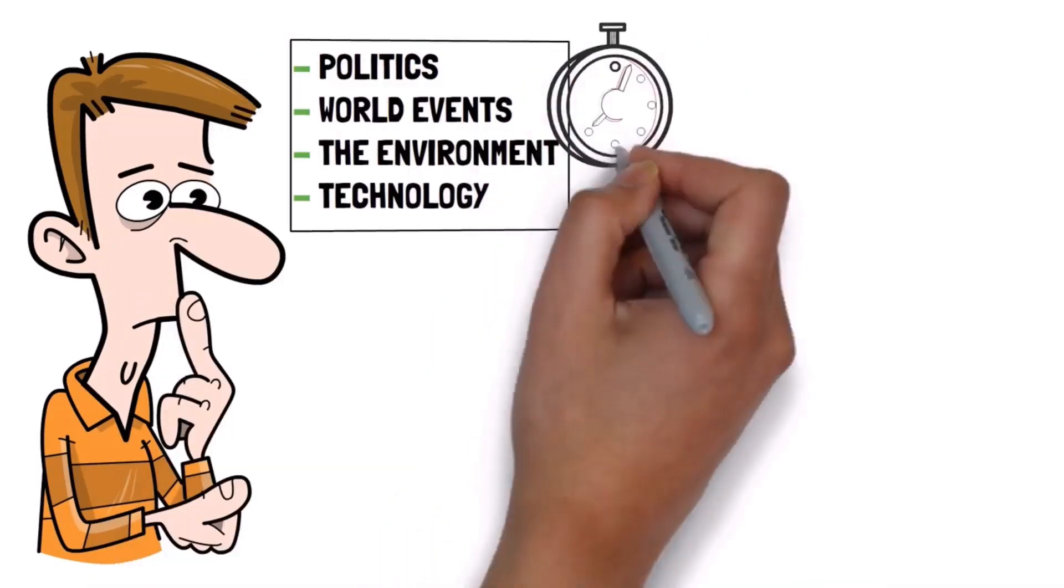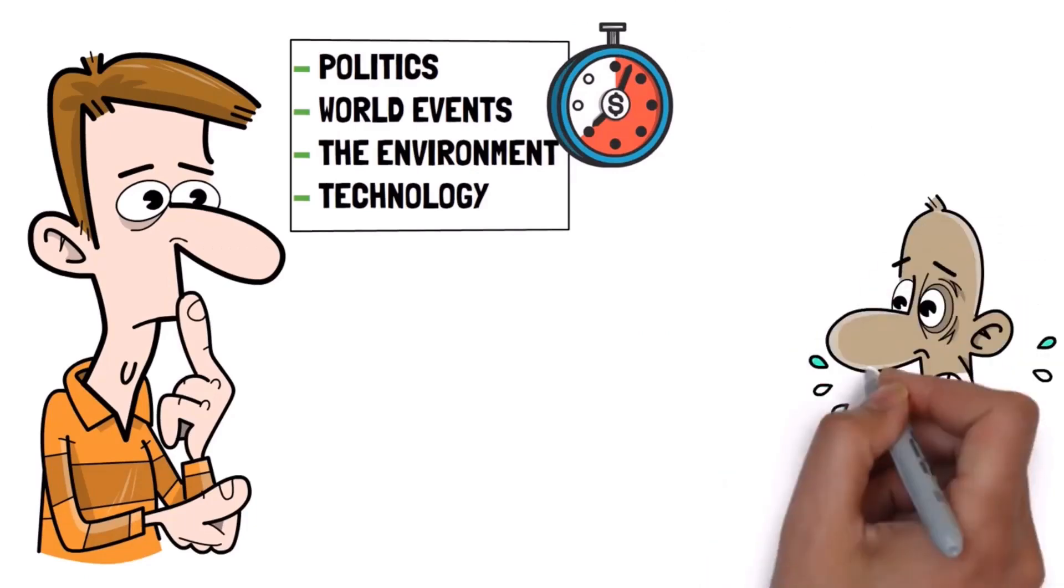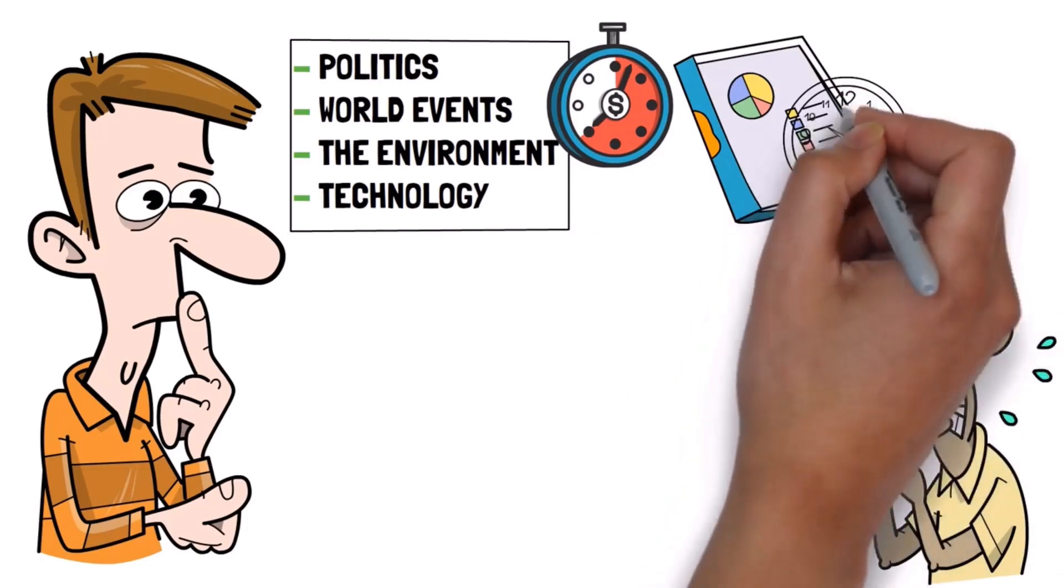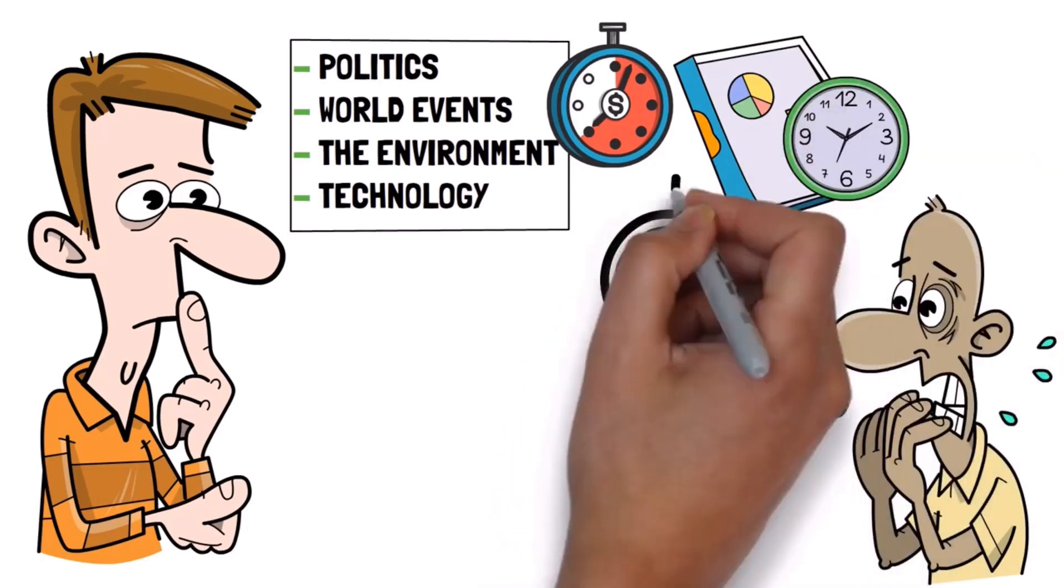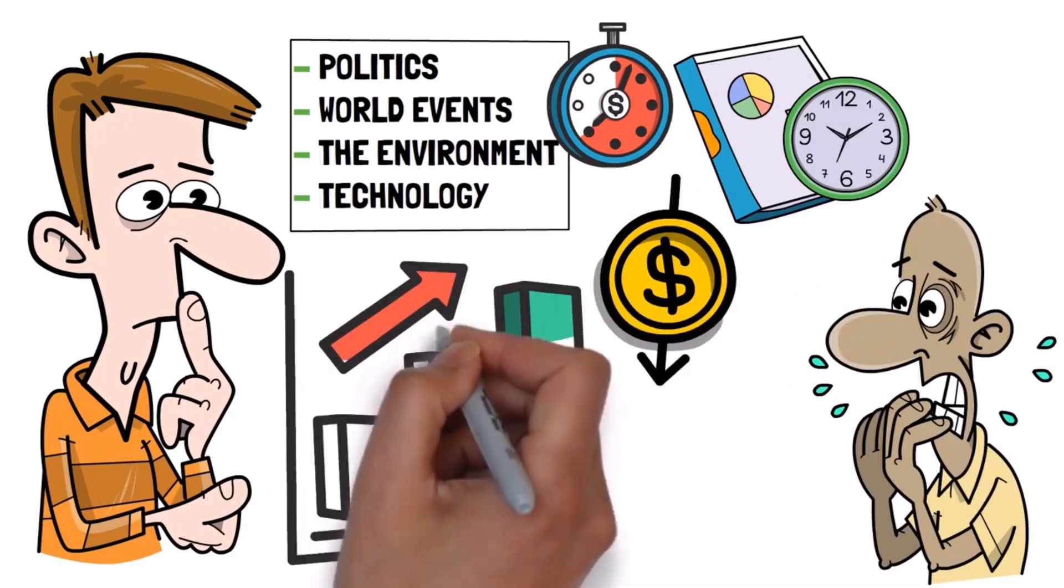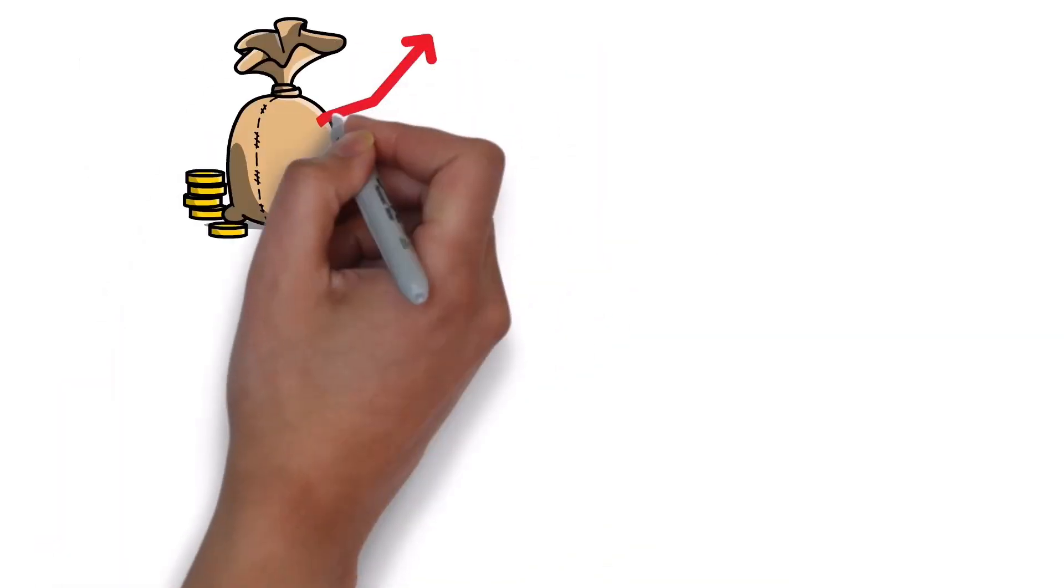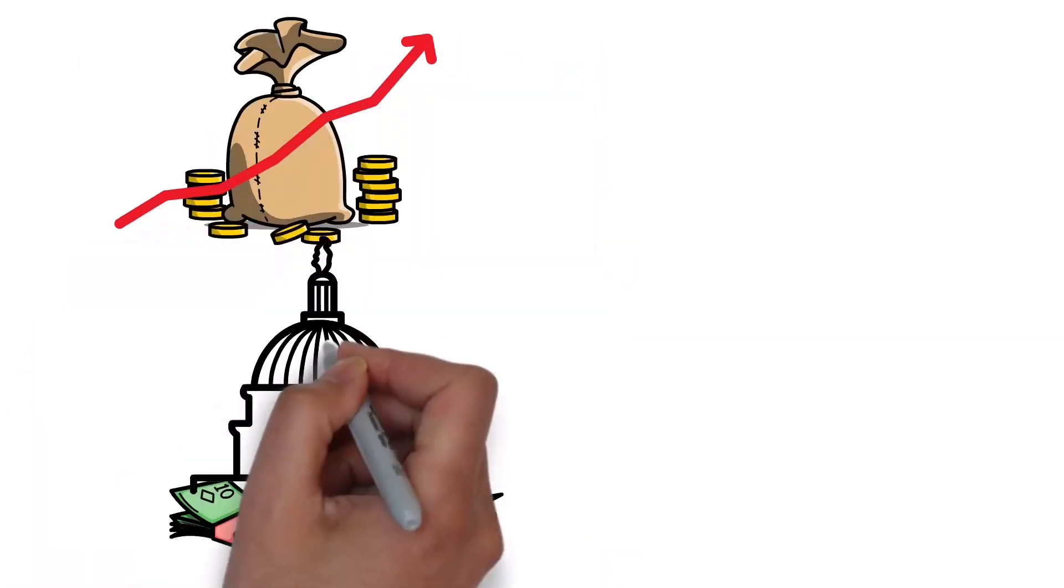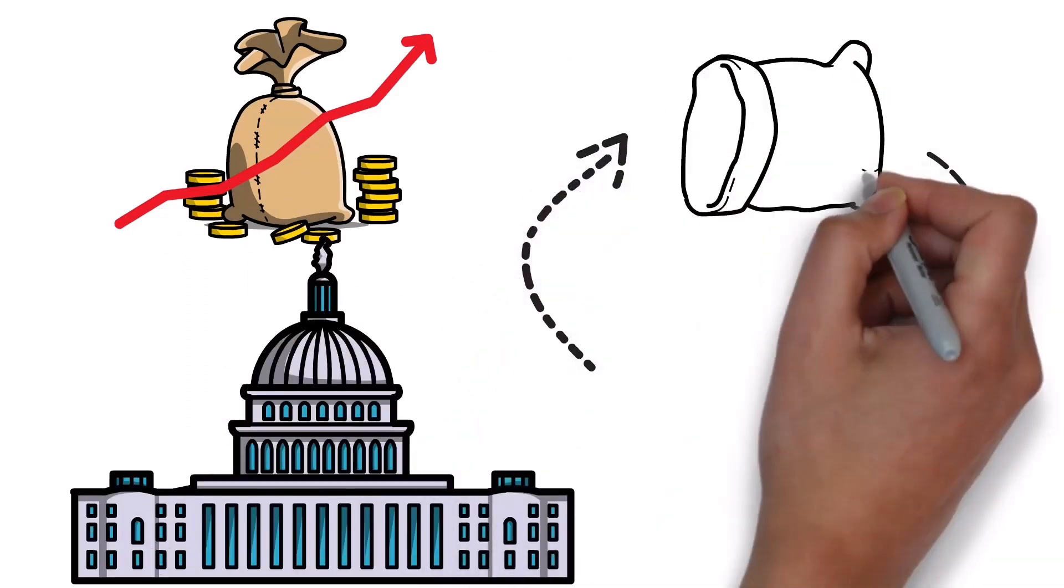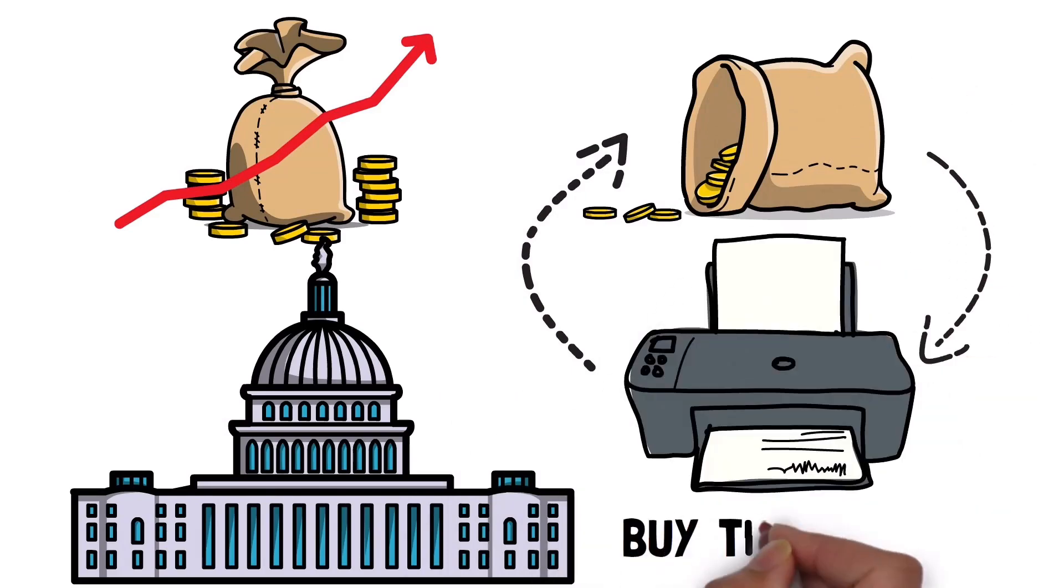But when Ray talks about the long term, that's where things start to look more concerning. He believes that based on history and looking at the numbers, it's almost certain that government budget deficits will be large and they'll likely grow even faster as the costs of servicing debt and other government expenses increase. As these costs rise, governments will need to borrow more money, creating a cycle where they keep borrowing more and more and central banks might have to print more money to buy this debt.